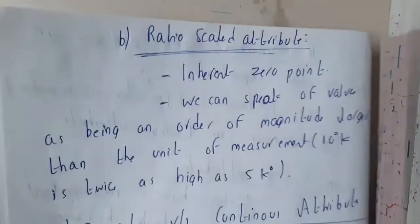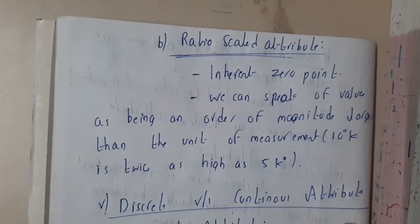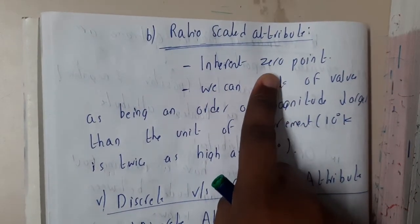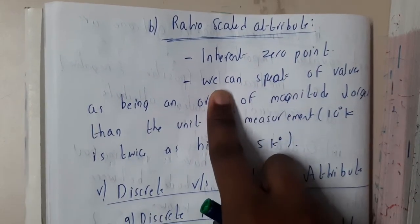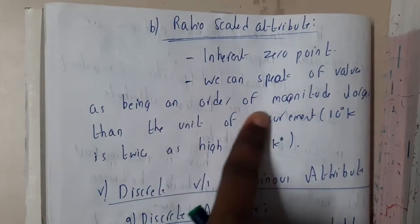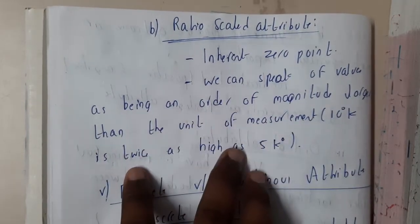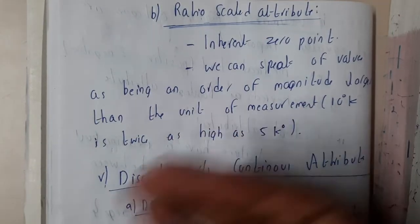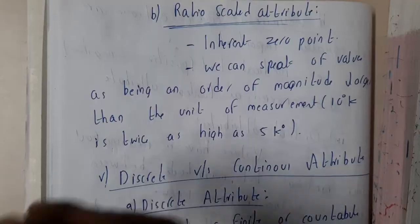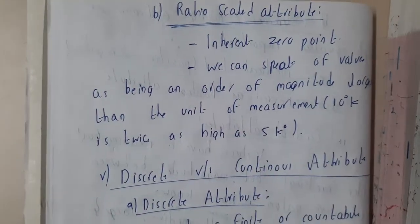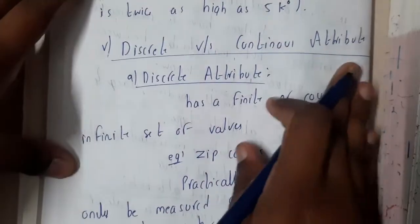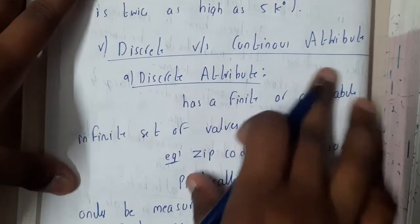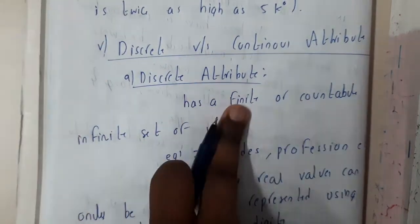Ratio scaled attributes involve ratios. In interval scaled, we do not have a true zero point, whereas in ratio scaled we can have a zero point. We can speak of a value being an order of magnitude or a multiple of another — for example, 10 Kelvin is two times the multiple of 5 Kelvin. You can express values in terms of ratios, like multiplying one value to get another.